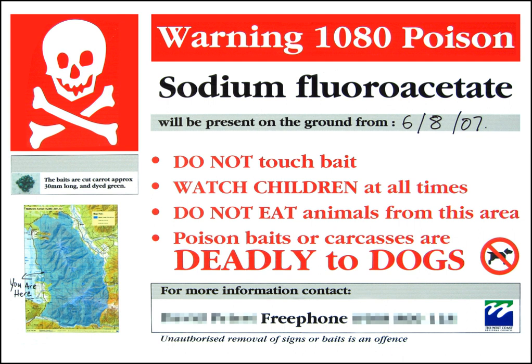Compounds containing fluorine-18, a radioactive isotope that emits positrons, are often used in positron emission tomography scanning, because the isotope's half-life of about 110 minutes is usefully long by positron emitter standards. One such radiopharmaceutical is 2-deoxy-2-[18F]fluoro-D-glucose, commonly abbreviated as 18F-FDG, or simply FDG. In PET imaging, FDG can be used for assessing glucose metabolism in the brain and for imaging cancer tumors.